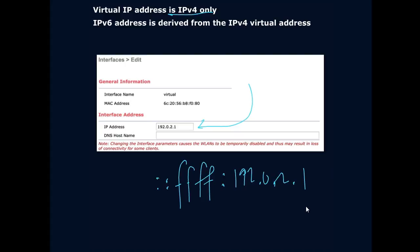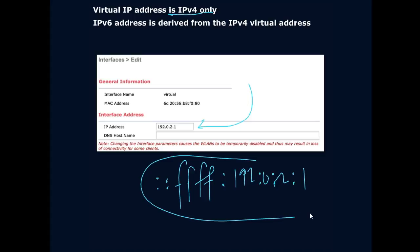Not a super difference in the actual configuration, but remember: our virtual IP address is only for IPv4. That's what we're going to set it up as — IPv4. Then the actual IPv6 address will be derived automatically for us by the wireless LAN controller.